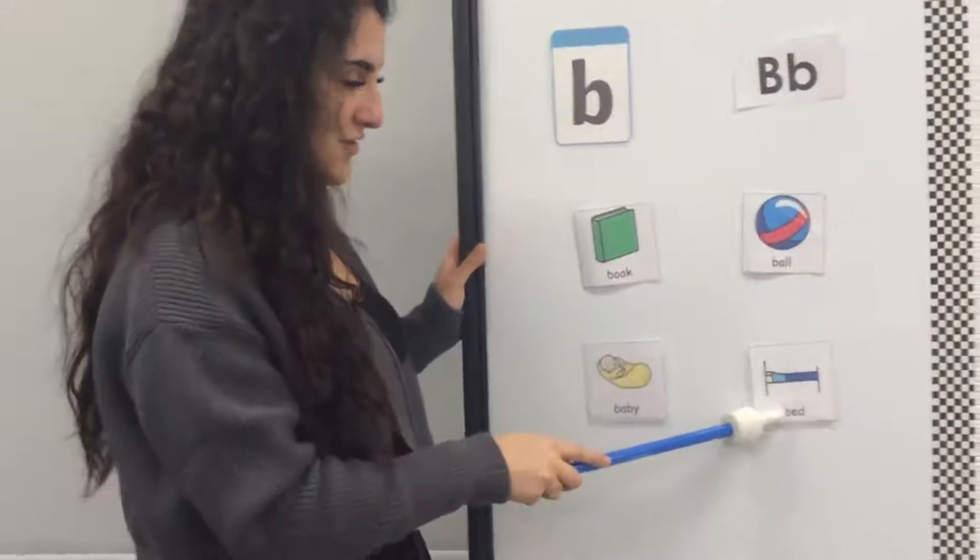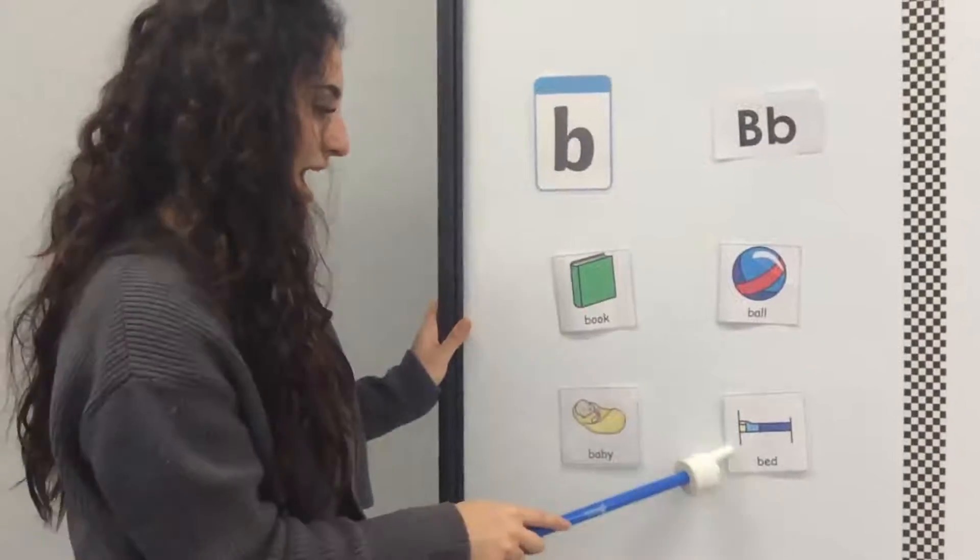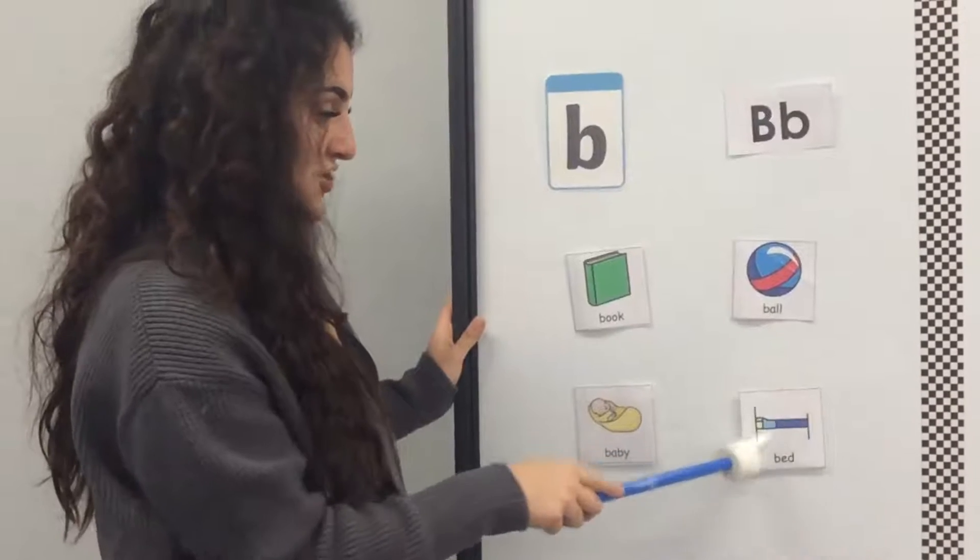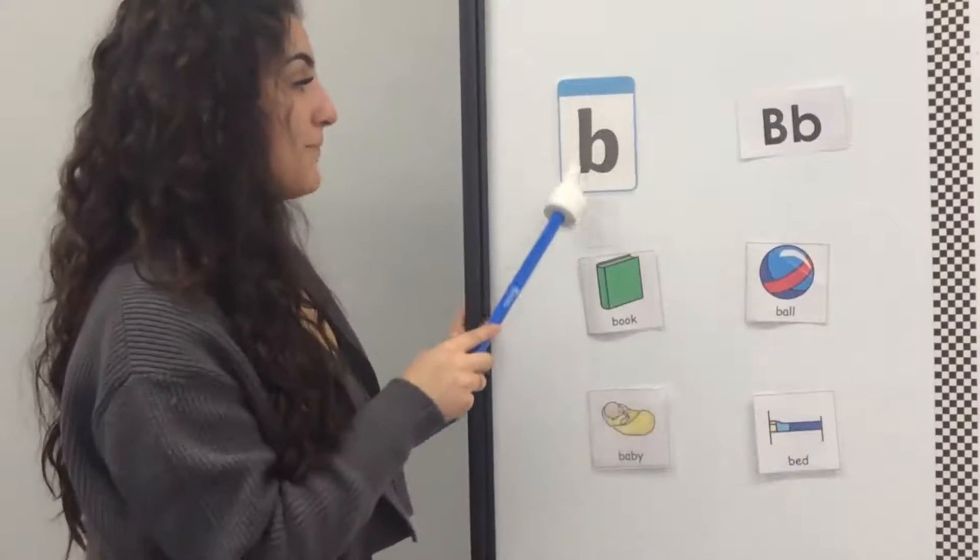And finally I've got B for bed. Let's all sign bed. And I've got the picture and the word for bed. And bed also begins with the letter B. And remember B makes the B sound.